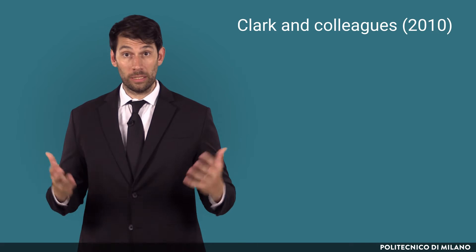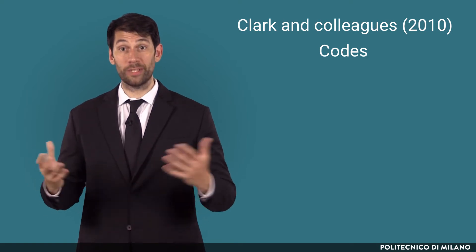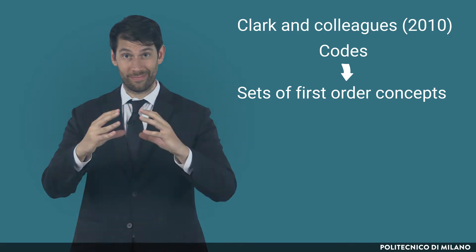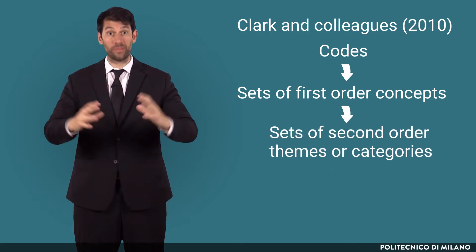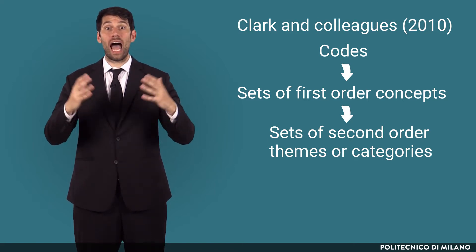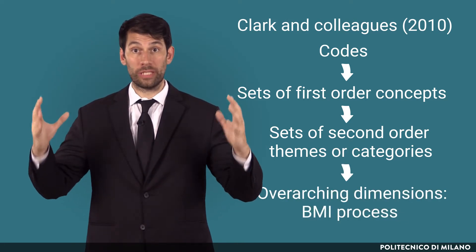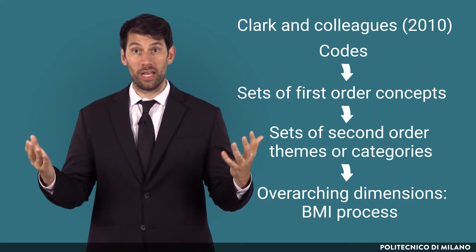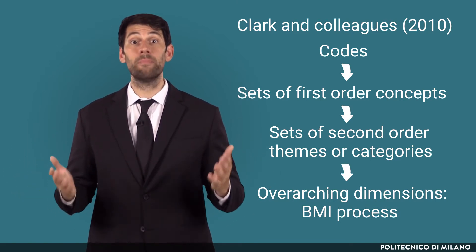Following Clark and colleagues, such codes were iteratively contrasted and compared among interviews, so as to aggregate them into sets of first-order concepts. These first-order concepts were then further aggregated around a set of second-order themes or categories that allowed viewing the data at a higher level of abstraction. Eventually, in a third and concluding step, the second-order themes were grouped into overarching dimensions capturing the paramount steps and constituting elements in a BMI process.